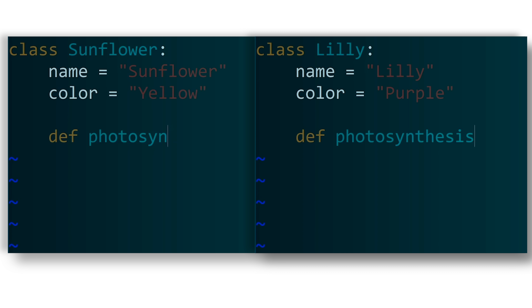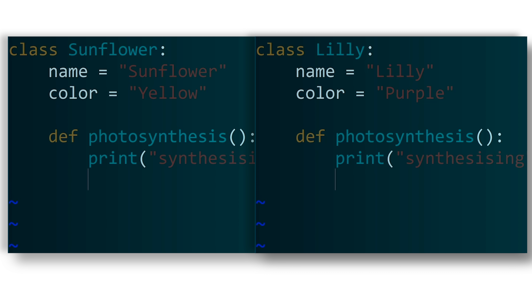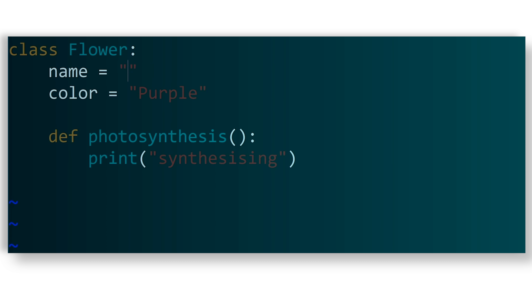A high level of abstraction basically means you don't repeat yourself in your code and you create a clean, efficient piece of code. For example, let's say you have a game and you want to have flowers — a sunflower and a lily. A problem could be that you end up writing a separate class for each, when in fact they share the same properties: the color of the flower, the name, and photosynthesis. In that case you don't need two separate classes — you can get away with just one class called Flower.